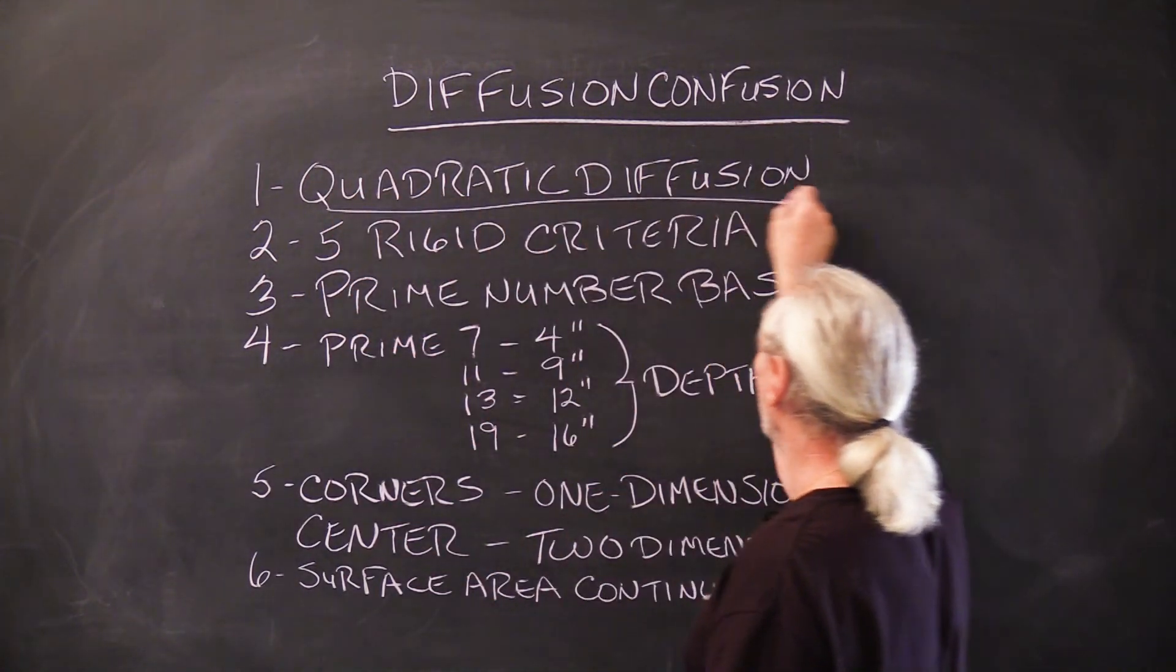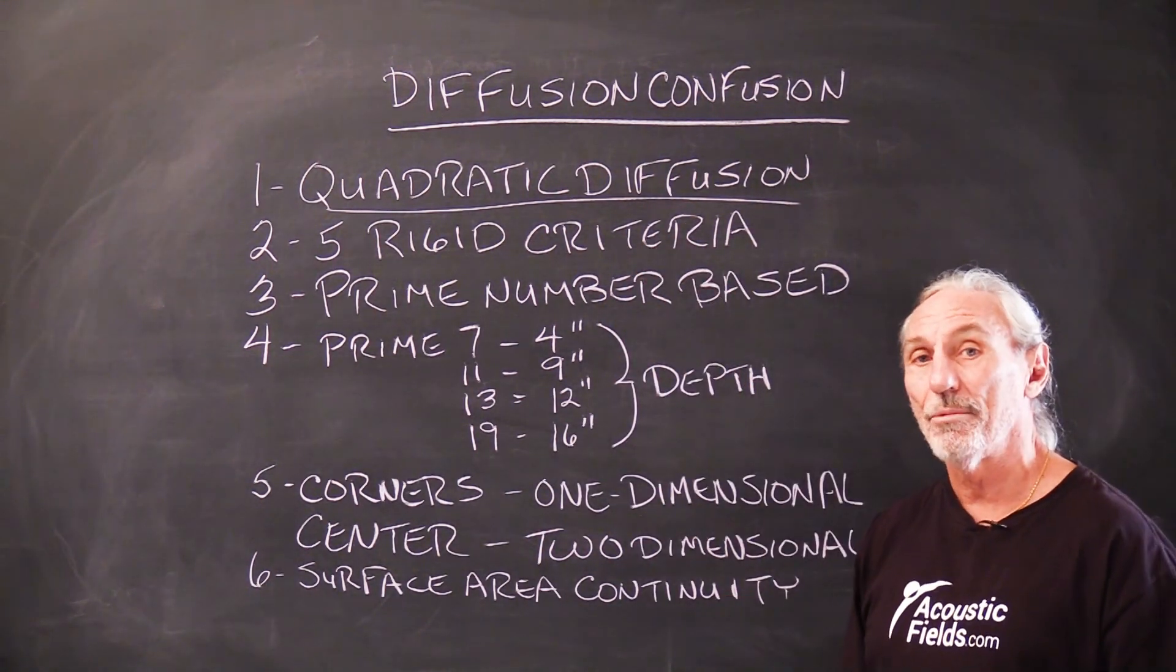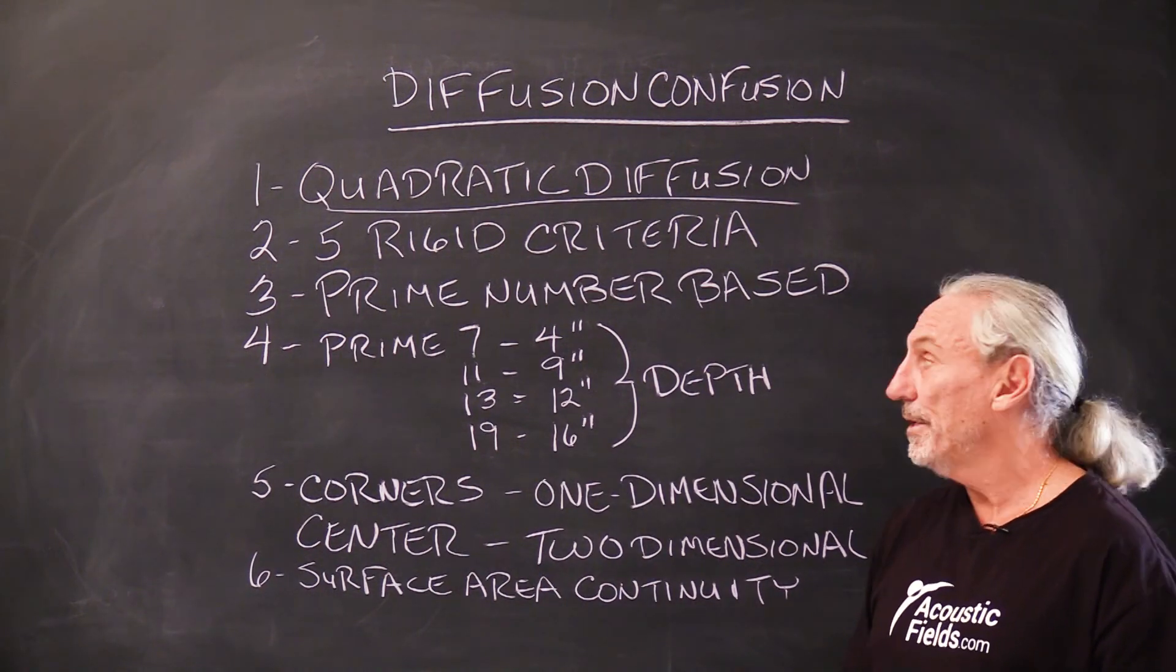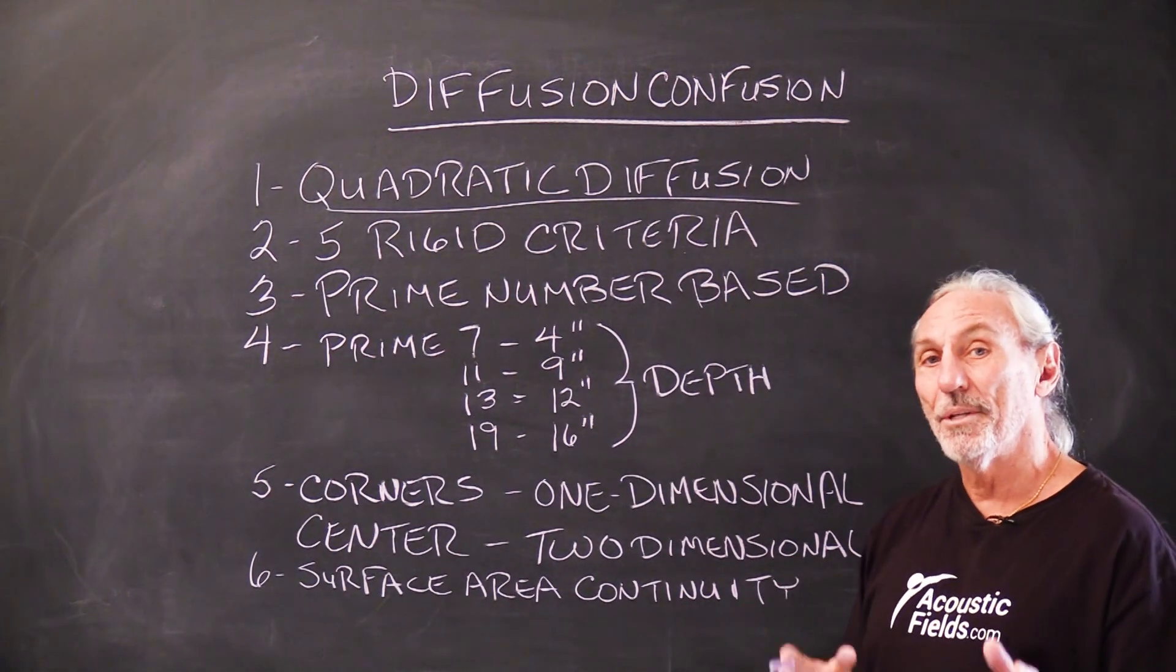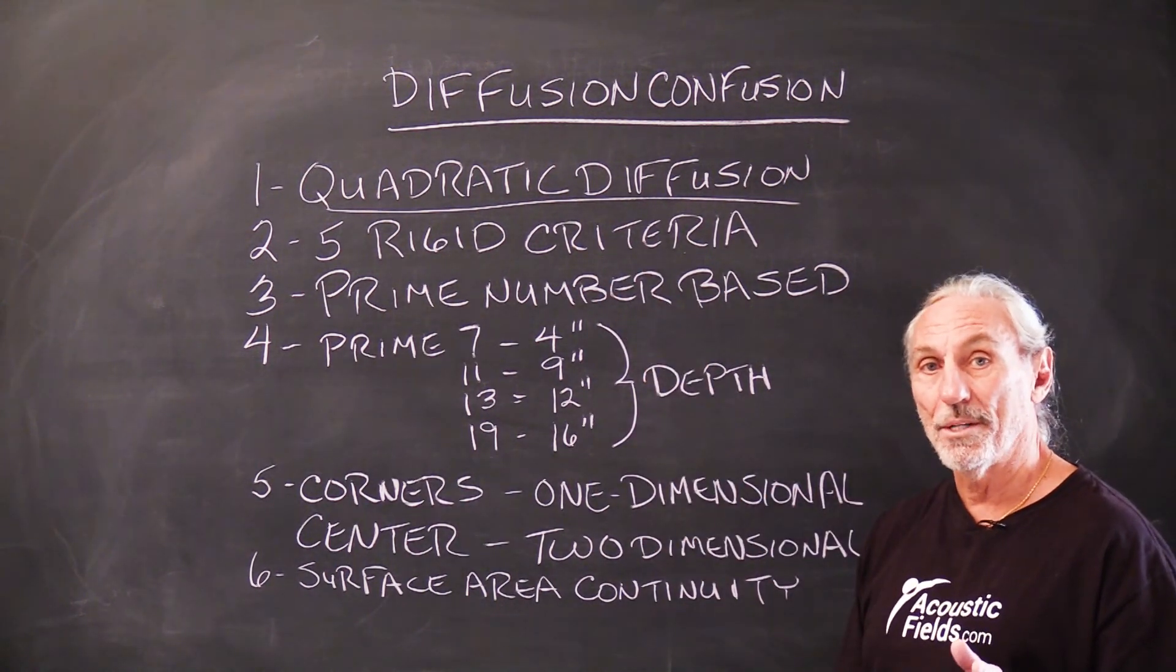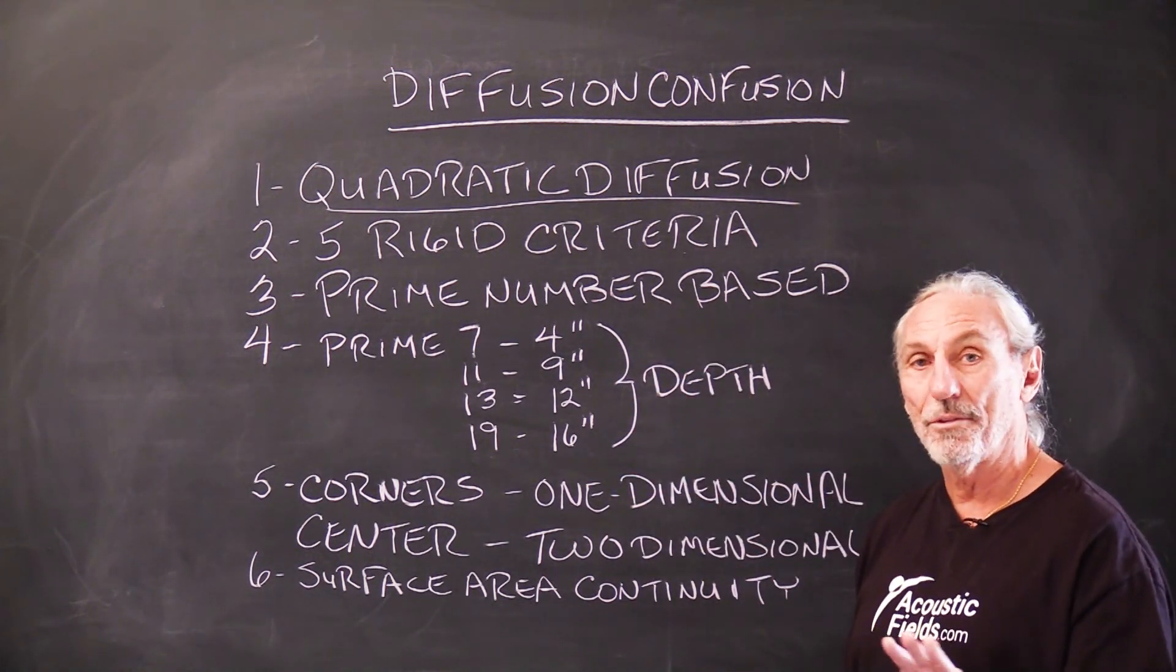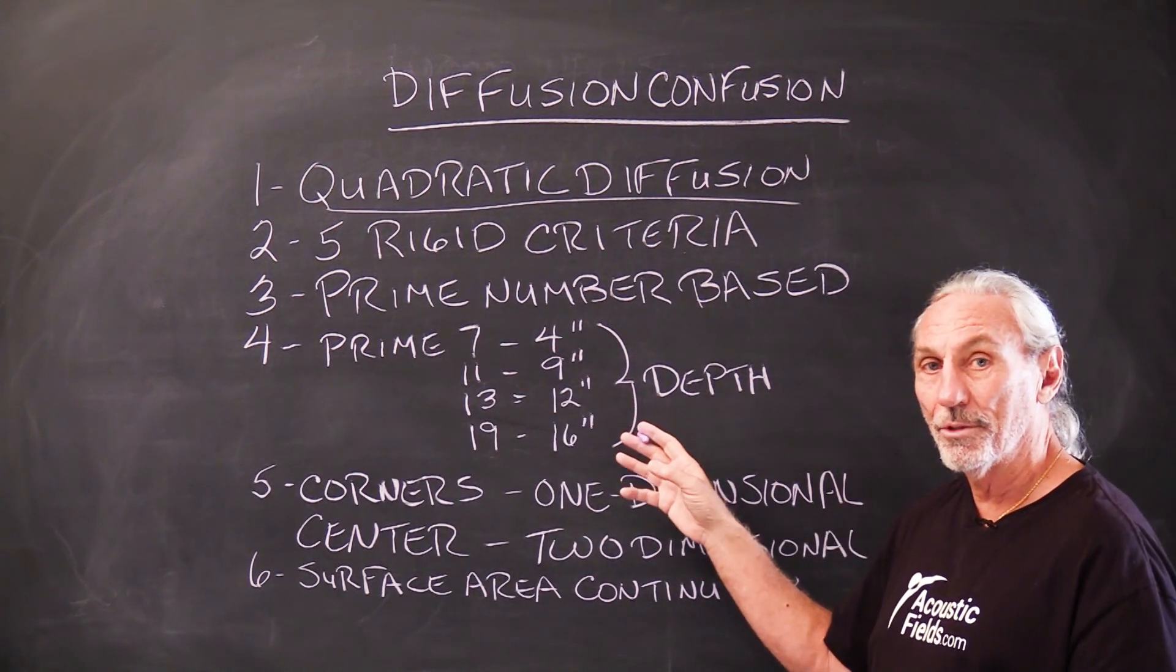Let's back up a little bit. We know that quadratic diffusion is the only true diffuser because it can satisfy the five real rigid criteria. I've done many videos on that. You can go through YouTube and search quadratic diffusion. In order to satisfy these five rigid criteria within our rooms, the product has to be designed a certain way to meet that criteria.